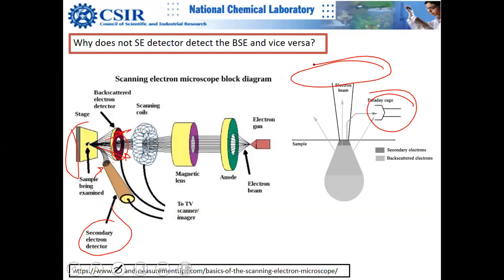The explanation: electrons from the electron gun, say 20 keV, impart energy to secondary electrons from the valence or conduction band. Backscattered electrons originate from deeper regions than secondary electrons.